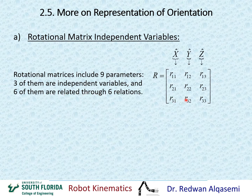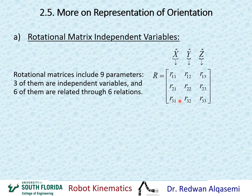The three independent variables in a general rotation matrix can be represented by rotation about X by some angle, rotation about Y by another angle, and rotation about Z by a third angle. So these three independent variables are the angles of rotation about X, Y, and Z, and that represents a general rotation matrix.